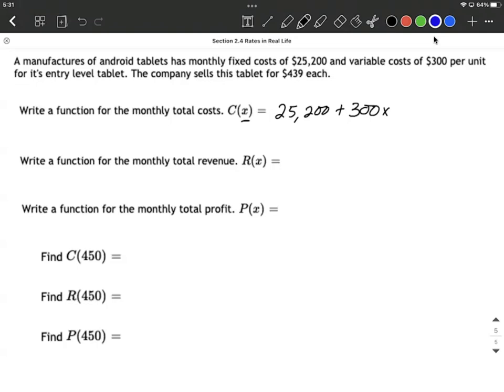Alright, next up our revenue function. Our revenue function is going to be given by, well, however much money we're bringing in, right? So for each tablet we sell, X, we're going to bring in $439 multiplied by however many tablets we sell.